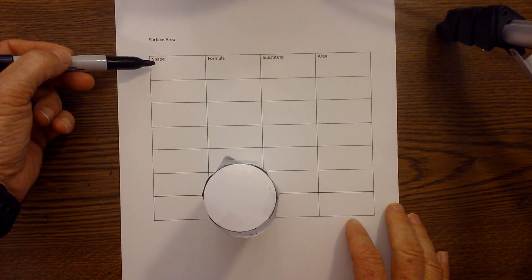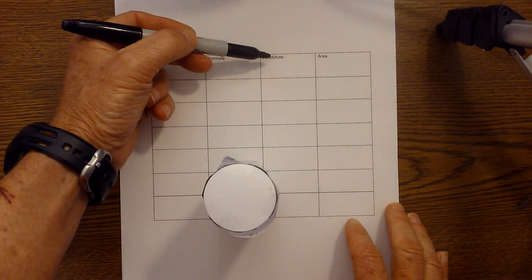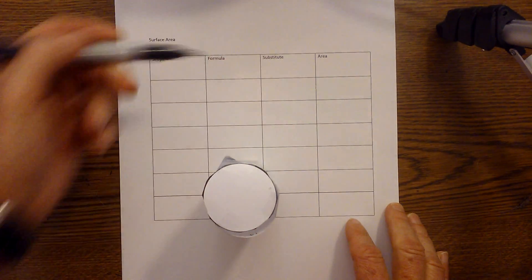So I have a grid here and I have shape, formula, substitute the numbers, and then area.